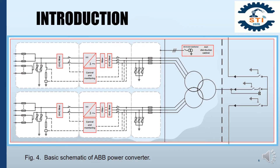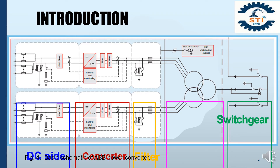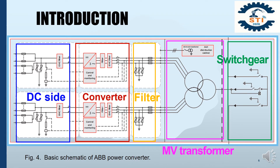Figure 3 shows the basic schematic of an ABV power converter. This converter has 5 bars. As shown in this figure, the converter converts the output voltage of the DC side into AC voltage. For reducing harmonics, a filter circuit is used. Then the filter output is directed to the grid, via medium voltage transformer and switchgear. Here switchgear is used for protection purposes.